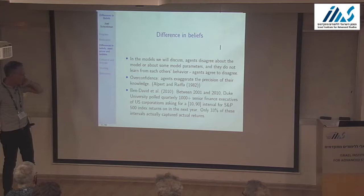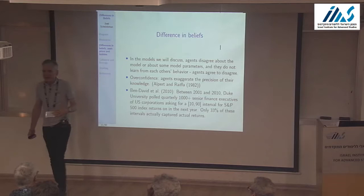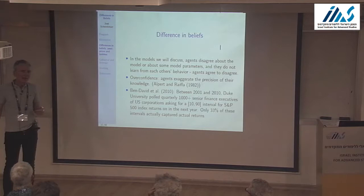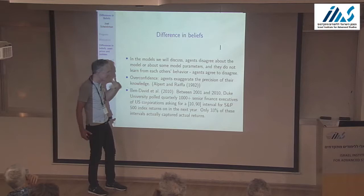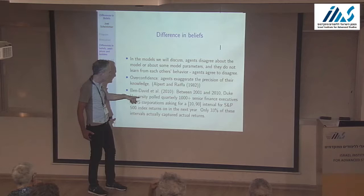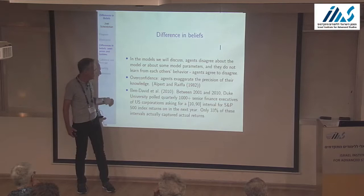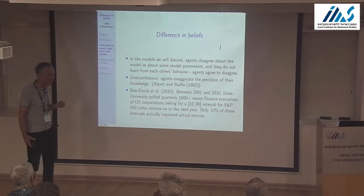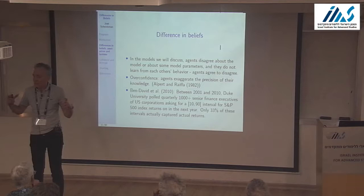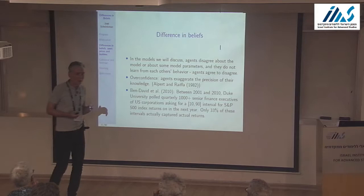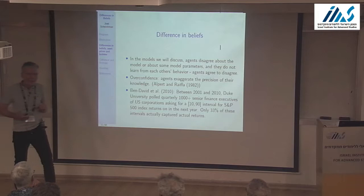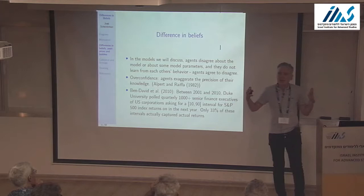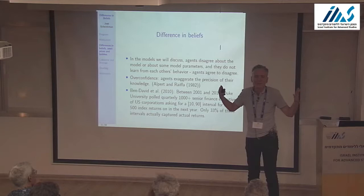One piece of evidence for overconfidence I like: Duke University polled about a thousand senior finance executives in US corporations from 2001 to 2010, asking for the 10–90 confidence interval for the S&P return next year. Give me two numbers: one where there's less than a 10% chance the S&P will be below, and one where there's less than a 10% chance the S&P will be above.